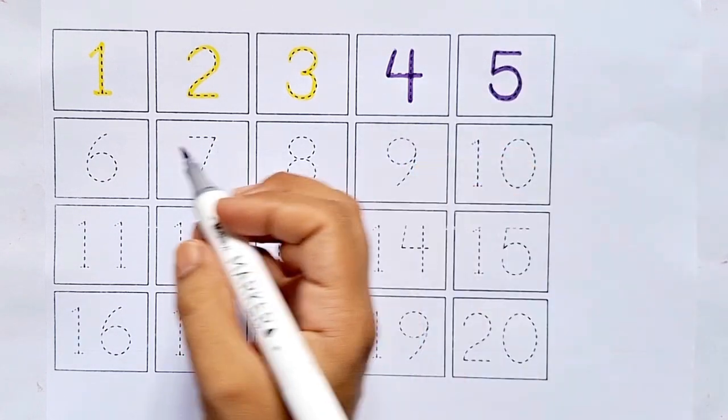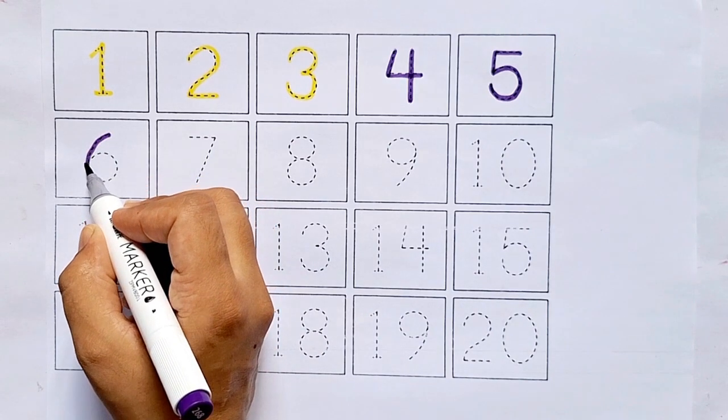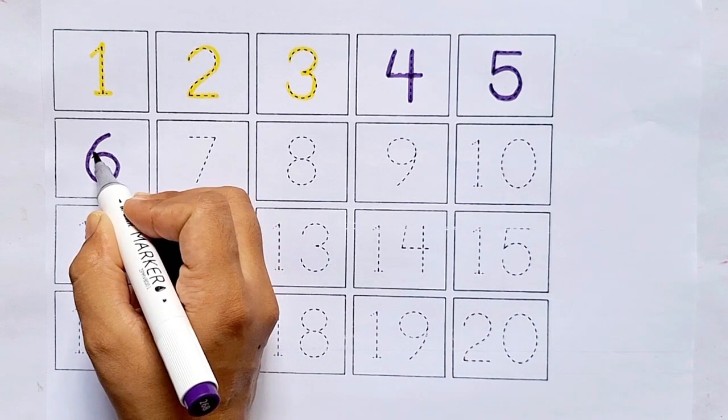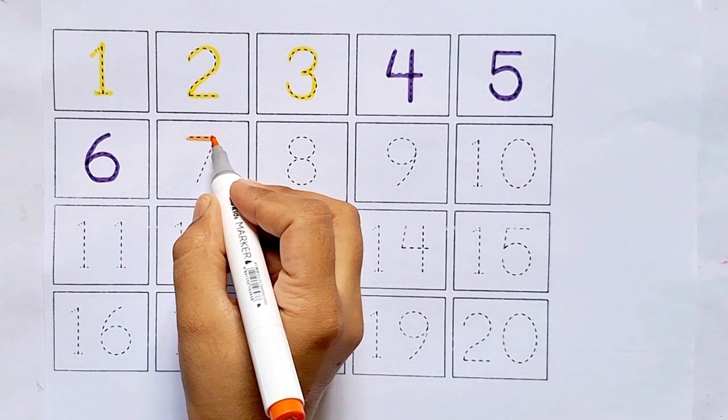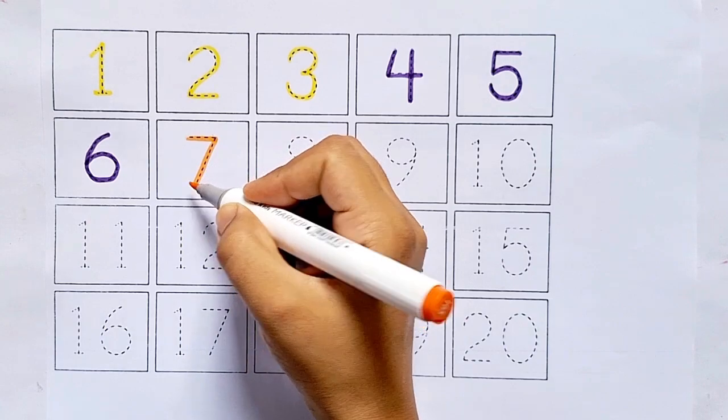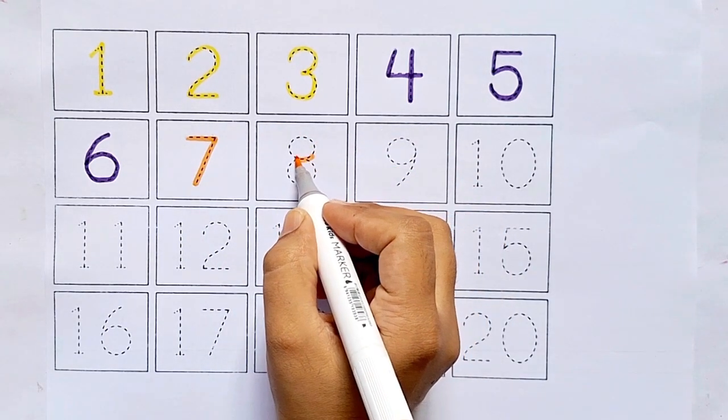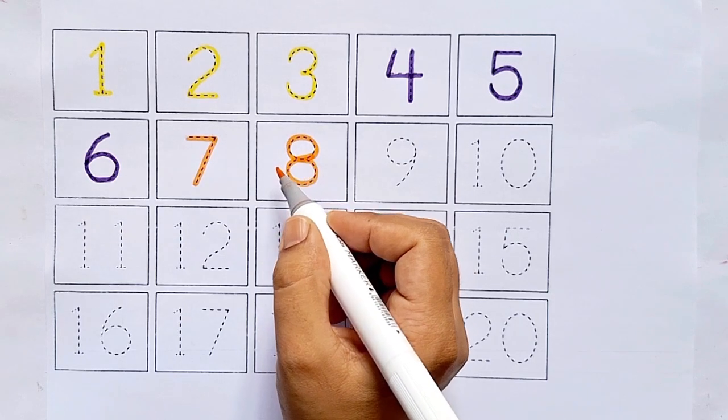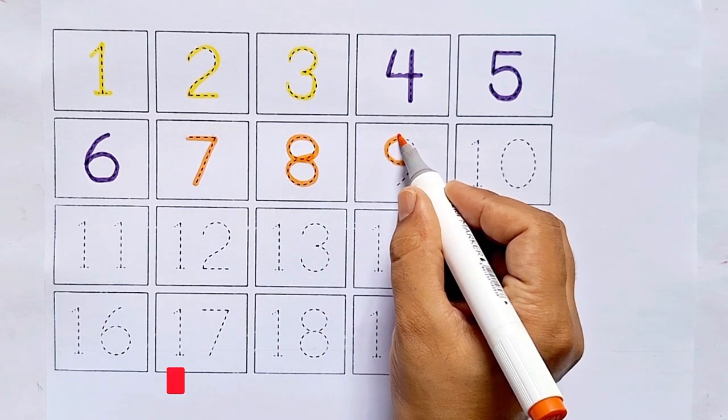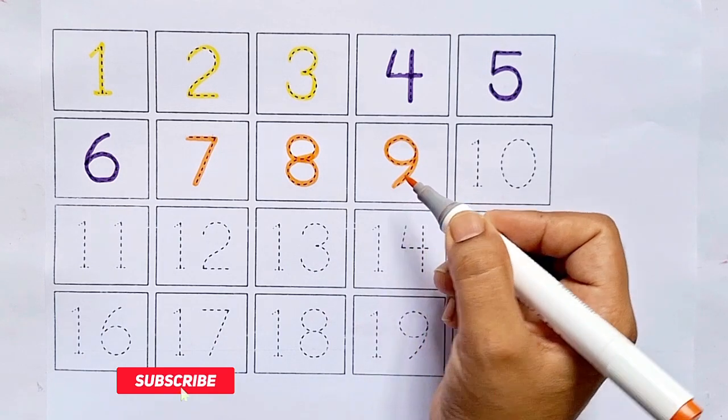Six. This is six. After five comes six. Seven. This is seven. After six comes seven. Eight. This is eight. After seven comes eight. Nine. This is nine. After eight comes nine.